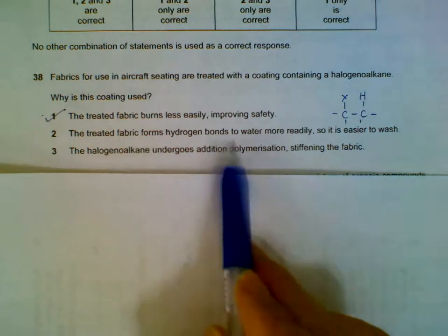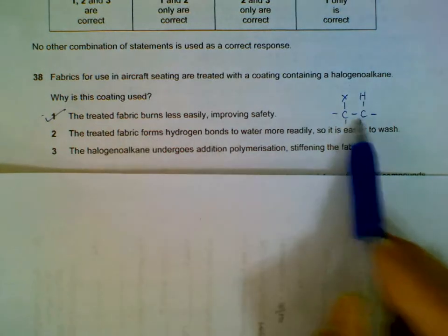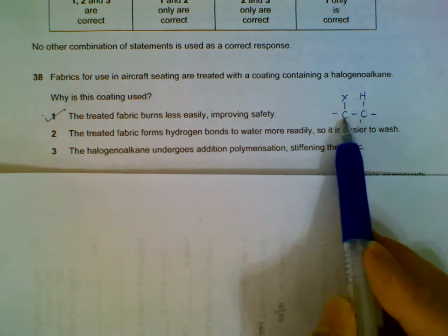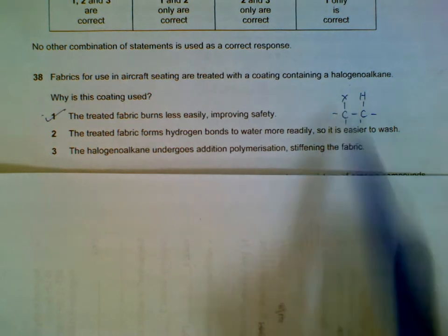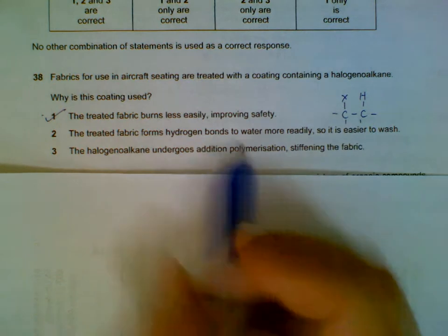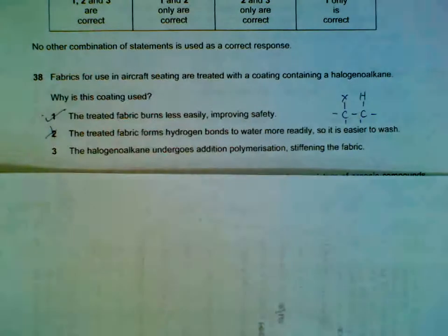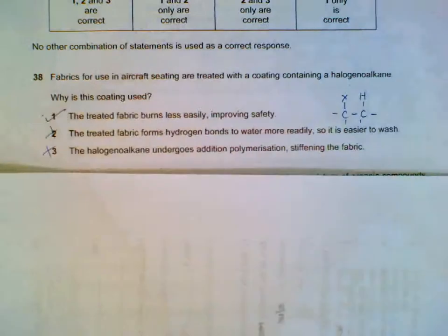The treated fabric forms hydrogen bonds - the halogen alkanes, the halogens are not directly joined to H, they are joined to C and all that. So they don't have hydrogen bonds, so this is not applicable. So statement three must be wrong also.